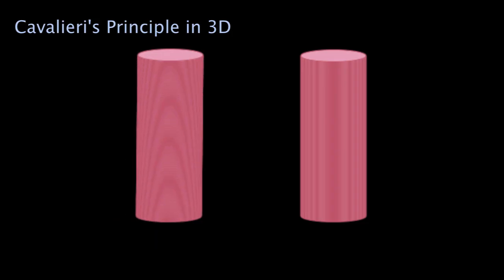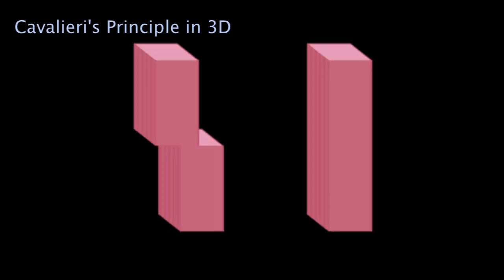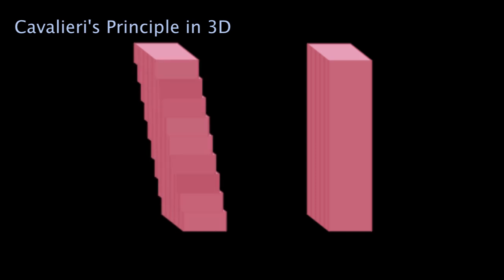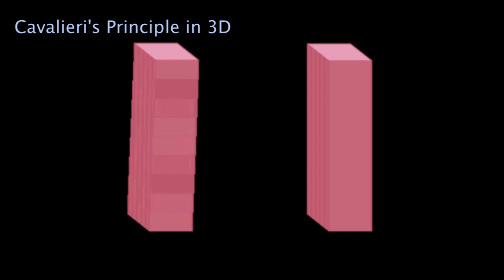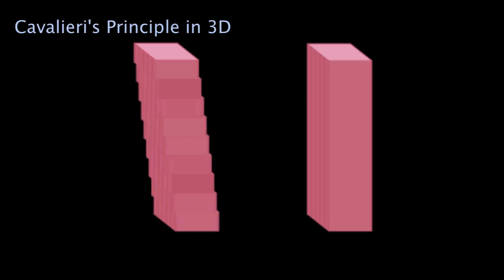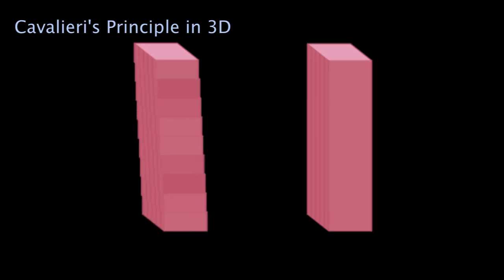That's not just true for cylinders — I could do the exact same argument with some form of a prism. Once again, they have the same volume. I could cut the left one in half and shift it around — doesn't change its volume. I could cut it more and shift those around, and it still doesn't change the volume. So Cavalieri's principle makes a lot of intuitive sense: if two figures have the same height, and at any point along that height the cross-sectional area is the same, then the figures have the same volume.